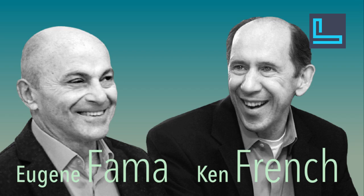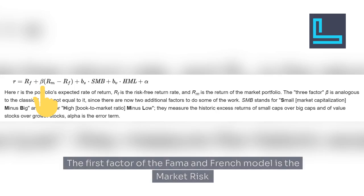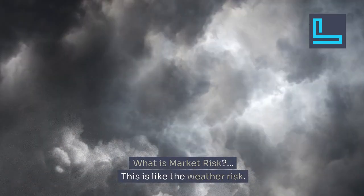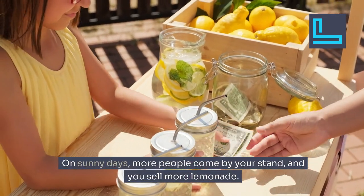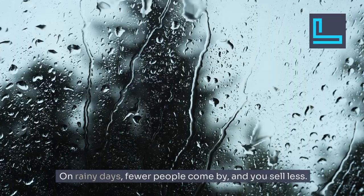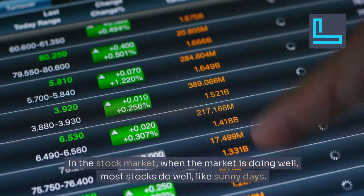First, let's break it down. The first factor of the Fama and French model is market risk. What is market risk? This is like the weather risk — on sunny days more people come by your stand and you sell more lemonade, on rainy days fewer people come by and you sell less.